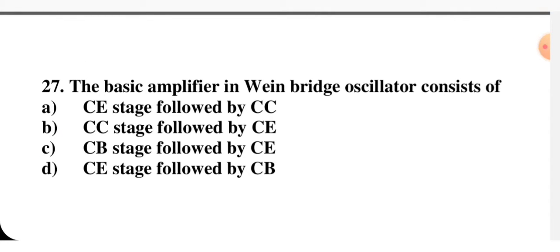The amplifier in a Wien bridge oscillator consists of — CE followed by CC, CC followed by CE, CB followed by CE, or CE followed by CB? CE means common emitter, CC means common collector, CB means common base. The basic amplifier in the Wien bridge is common emitter (CE) followed by common collector (CC), so option A is the right option.